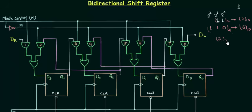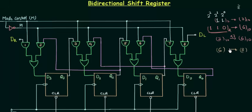We have multiplied the number by 2 and we have 6 now — this is what we will have when we shift the bit to the left. Now what if I shift this bit to the right? We shift 110 to the right and we get 3, so we have divided it by 2. When you shift the bit to the left you multiply by 2, and when you shift the bit to the right you divide by 2.